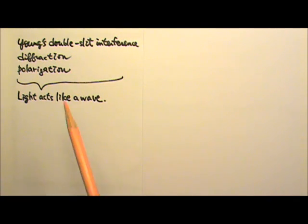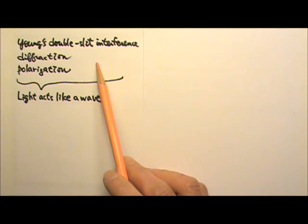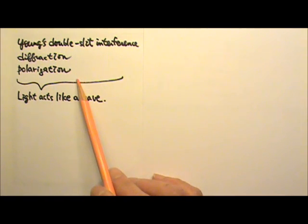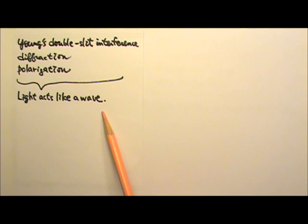At first, we were happy that Young's double slit interference, and then the diffraction and polarization of light showed us how well light wave theory worked.